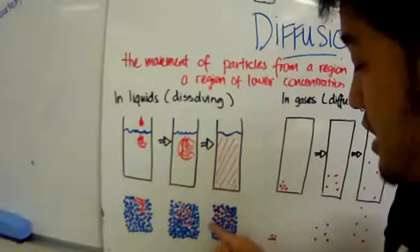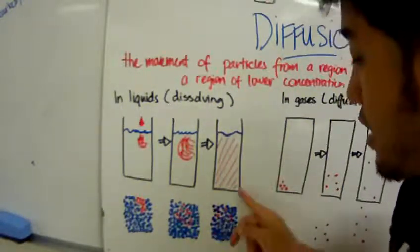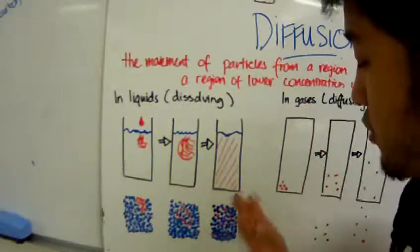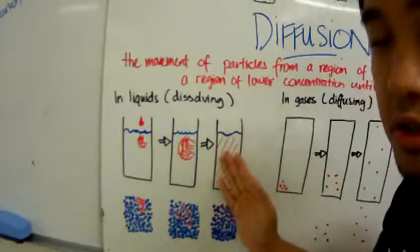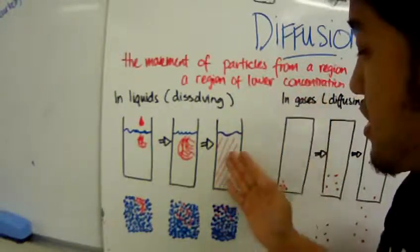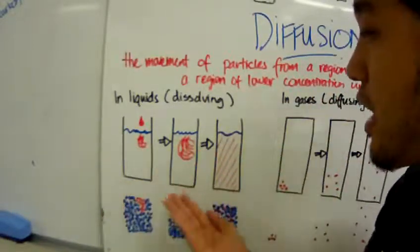Eventually what you have is an even spread of red food dye particles throughout the medium, throughout water. This red food dye particles evenly spread out throughout the container will give this red colored solution. So this is the act of dissolving.